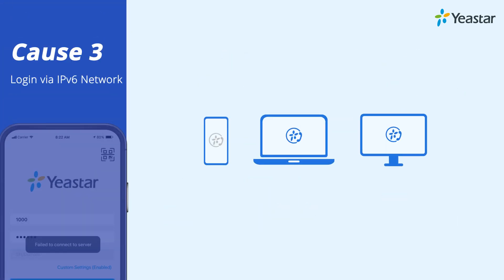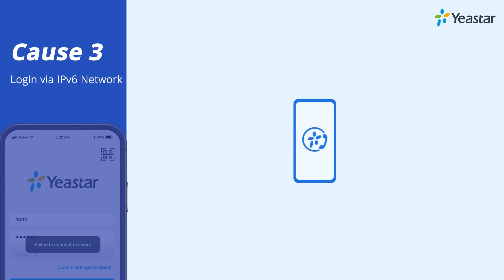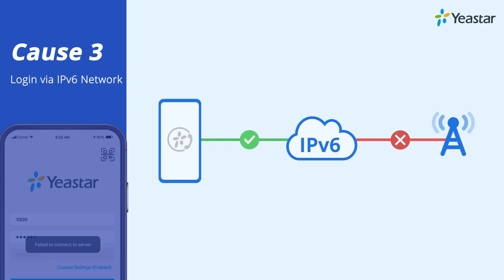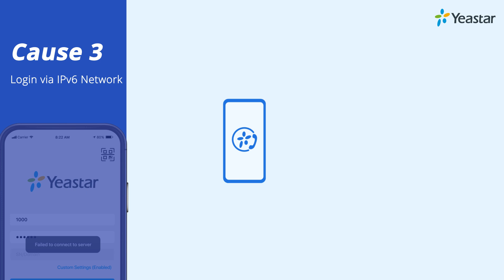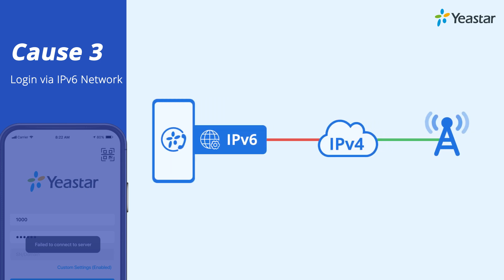If the problem happens only on some of the Linkus clients, you can check to see if it's caused by IPv6 network settings on Android phones. Linkus mobile client is already compatible with most IPv6 networks, but not all carriers are ready to support it. Therefore, if your mobile phone acquires an IPv6 network while the carrier supports only IPv4, you will have a problem. To solve this, please try to change your network to IPv4 on your mobile.